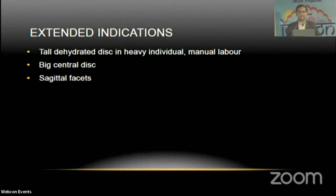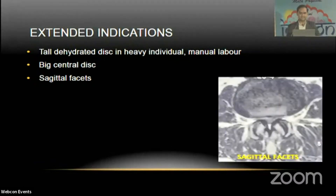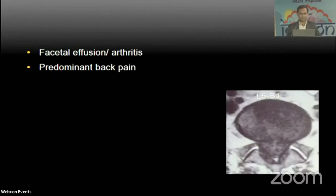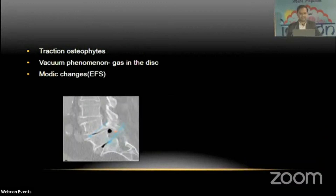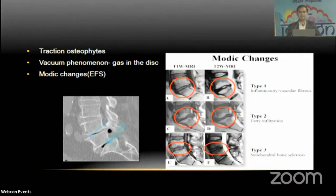Tropistic facets are more prone to instability and listhesis after decompression and may require fusion. Facetal effusion, arthritis, and predominant back pain in a patient presenting with another spine complaint also tend to be indications for fusion. Traction osteophytes and vacuum phenomena — gas in the disc — are occult signs of instability and require fusion. Modic changes in patients with back pain often will not resolve without fusion.